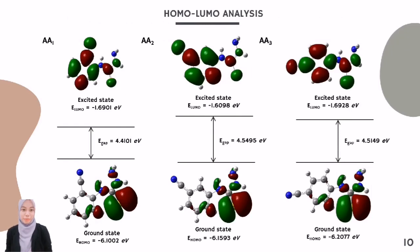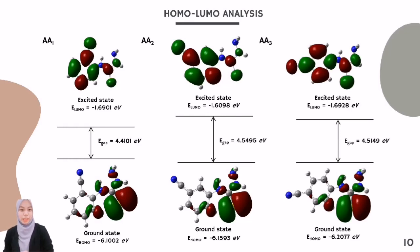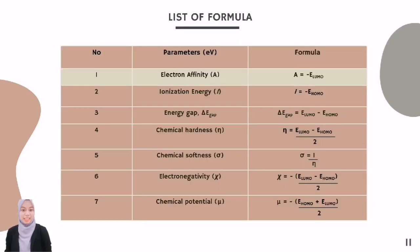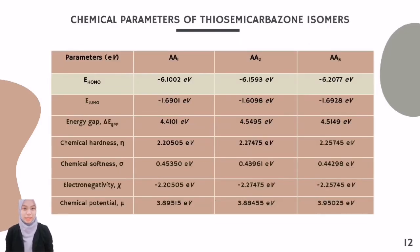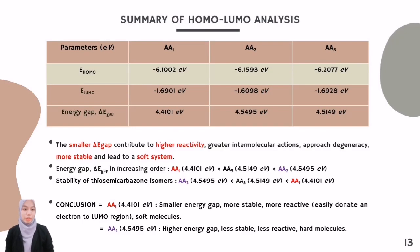For the HOMO-LUMO analysis, the results show that the energy gap of AA1 molecule is 4.4101 eV, AA2 is 4.5495 eV, while AA3 is 4.5149 eV. This indicates that AA2 molecule has a higher energy gap compared to AA1 and AA3 molecules. This is the list of formulas and chemical parameters of the thiosemicarbazone isomers. A smaller energy gap contributes to higher reactivity, greater intermolecular interactions, approach to degeneracy, more stability, and leads to a soft system.